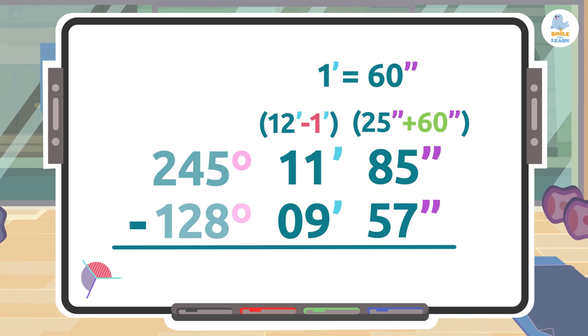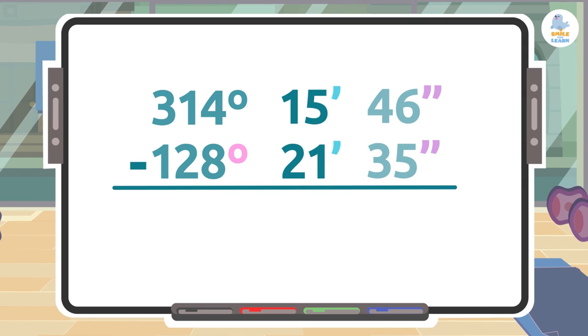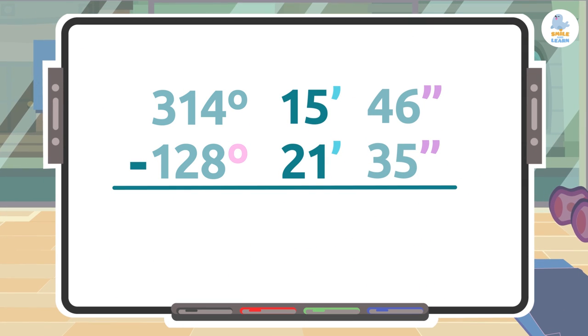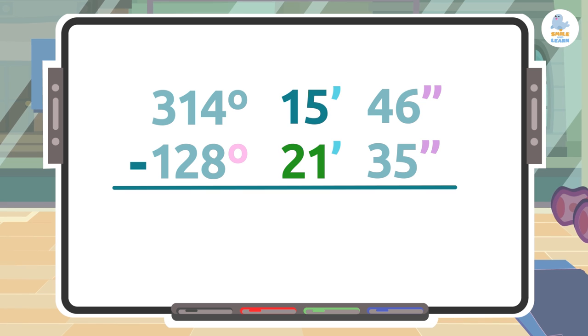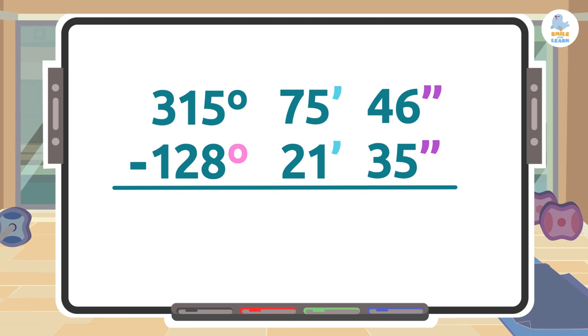If we subtract the minutes, then the same thing happens, meaning that the top number is less than the bottom one. Subtract one from the degrees and add 60 to the minutes and continue on with the subtraction.